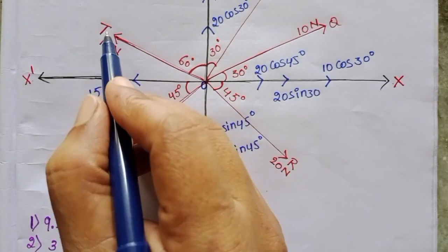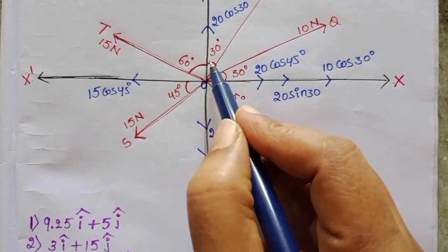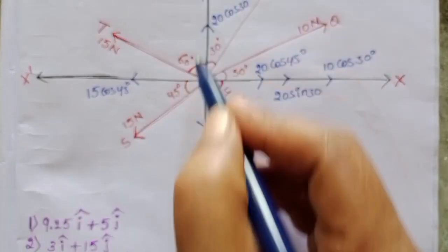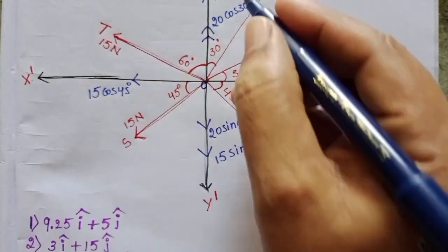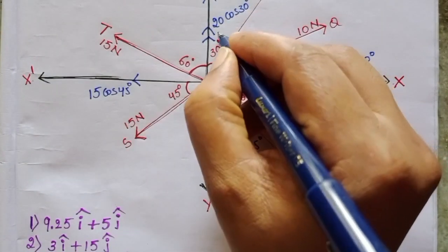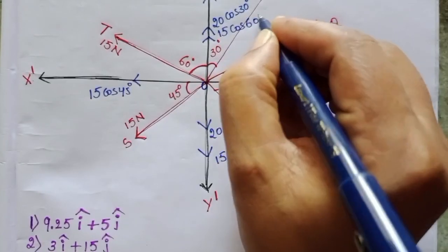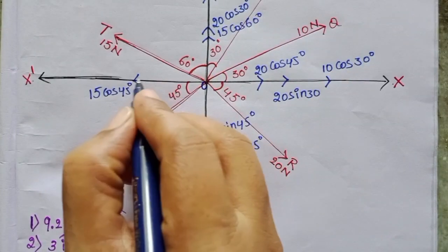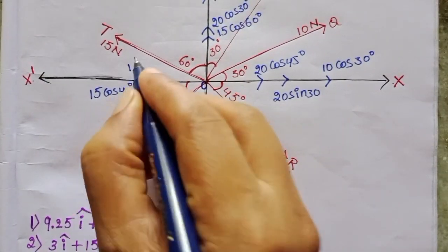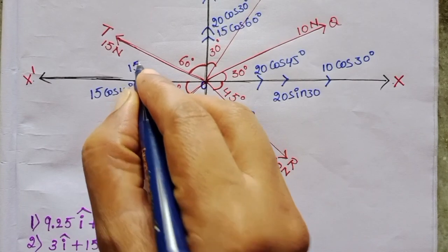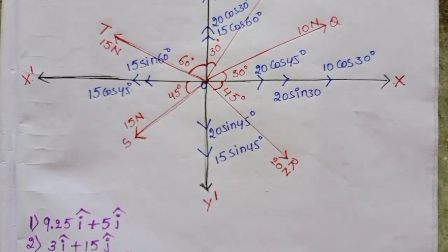The next force is OT. Its magnitude is 15 newton and it makes 60 degrees with the y axis. So along this direction the component is 15 cos 60 degrees, and along the x direction 15 sin 60 degrees.